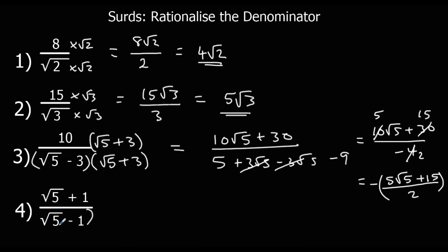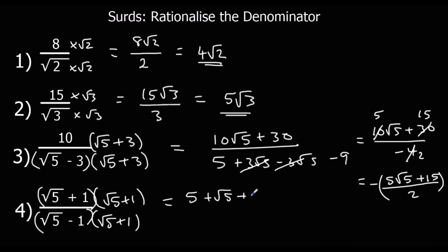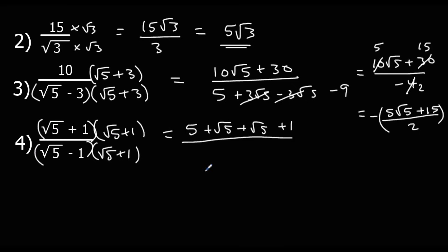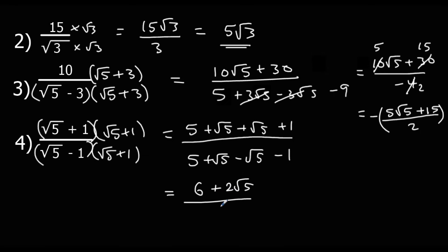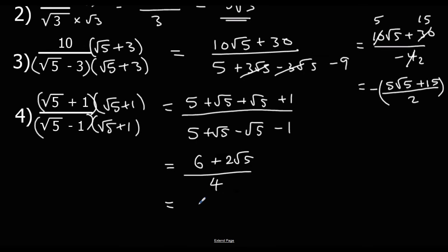For this one, I'm going to times by root 5 plus 1. On the top: 5 plus root 5 plus root 5 plus 1. On the bottom: 5 plus root 5 minus root 5 minus 1. So the top is 6 plus 2 root 5, and the bottom is 4. Again, I can halve this, giving 3 plus root 5 over 2. That's the simplest form.